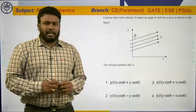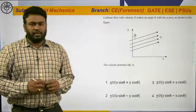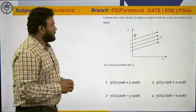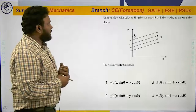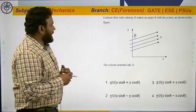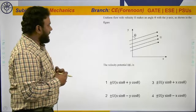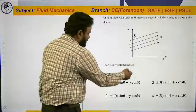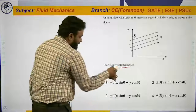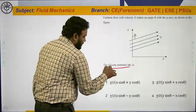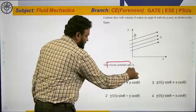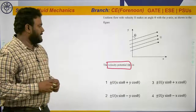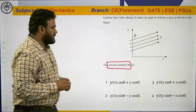Hello students, this is the second question from Seville 2020 forenoon paper. Uniform flow with velocity u makes an angle theta with the y-axis as shown in the figure — the velocity potential function. This question is obviously from fluid kinematics, specifically the velocity potential function.